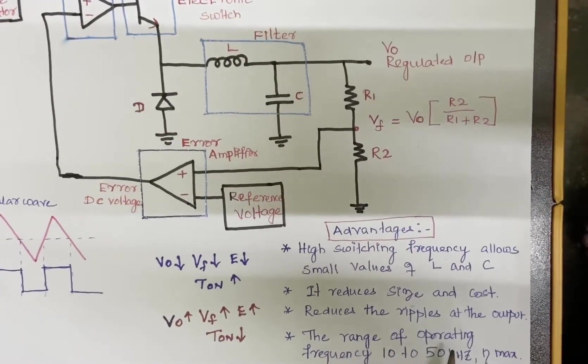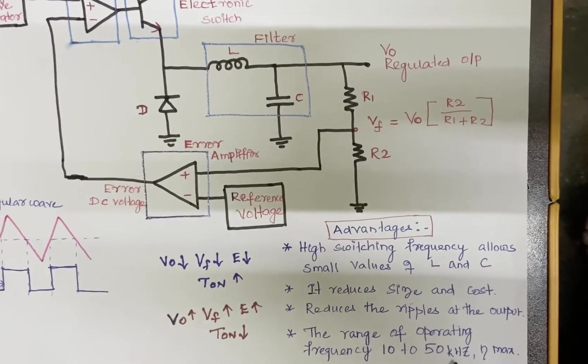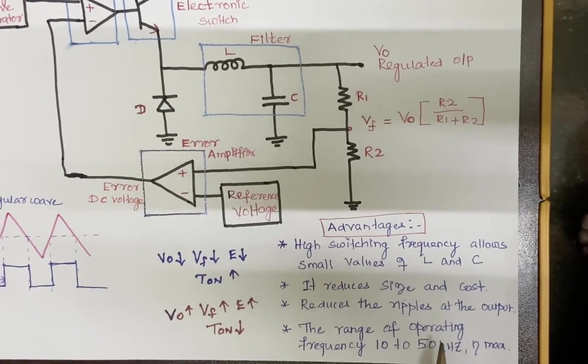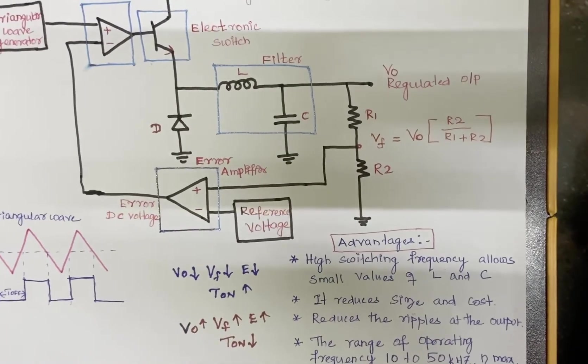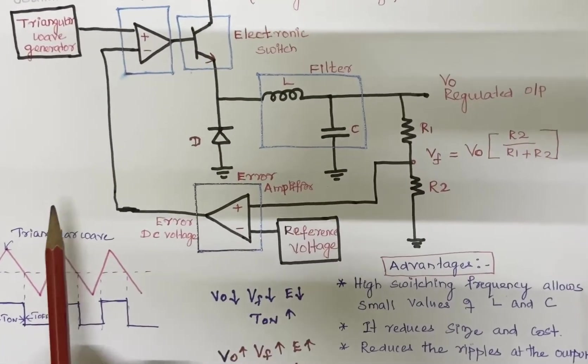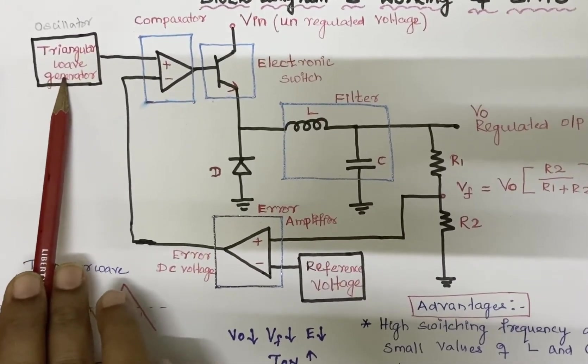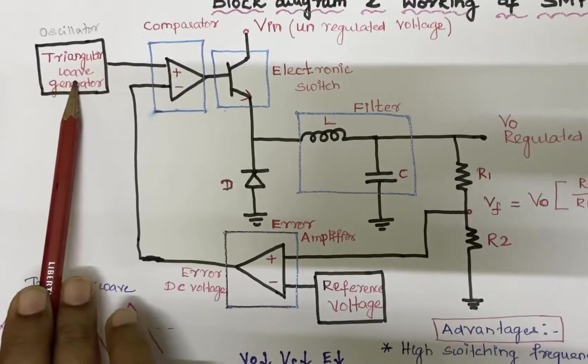The range of operating frequency for SMPS is 10 to 50 kilohertz, which produces maximum efficiency. Let us see the detailed block diagram of SMPS. The oscillator circuit produces the triangular wave at a constant frequency.